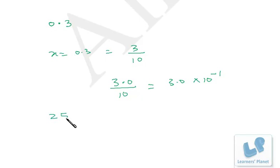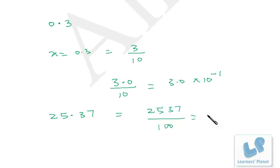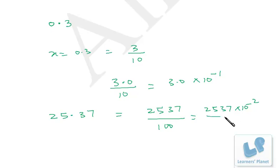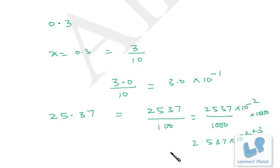Similarly take another example: 25.37. This is 2537 over 100, that is 2537 times 10 raised to power minus 2. Now to convert to standard form, we want the decimal after the first digit, so if we put the decimal after the first digit we divide by 1000. To neutralize the effect, we also multiply by 1000. So it's 2.537 times 10 raised to minus 2, times 10 raised to plus 3. So the final standard form is 2.537 times 10 raised to power 1.